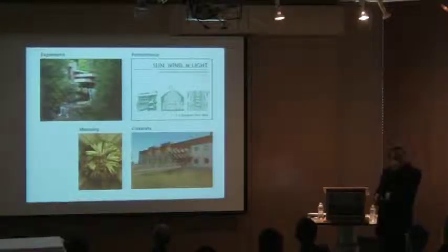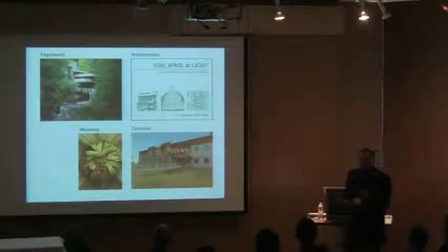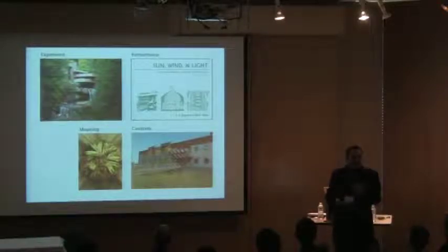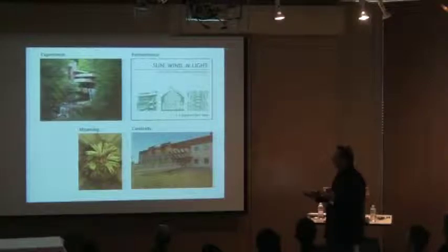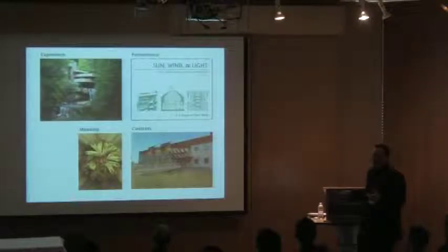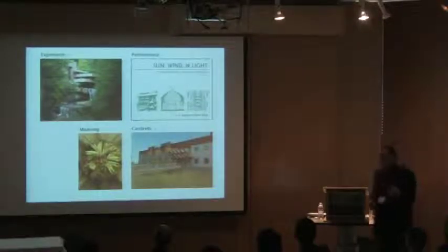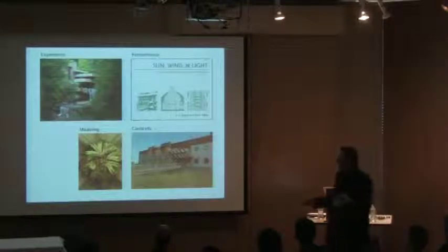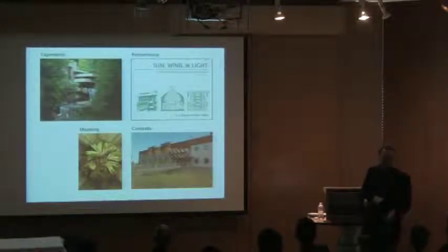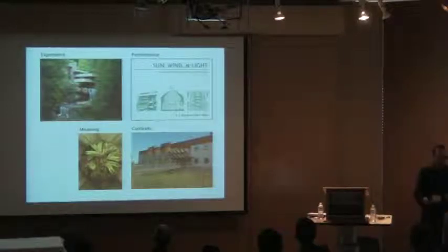You could take sustainable design and look at it from the standpoint of experience in a building like Fallingwater by Frank Lloyd Wright, which is really an icon of connecting people to the environment. And yet it's probably the most resource-consumptive house for two people before 1950 — it's 12,000 square feet and uses single-pane glass in a cold climate. So it does some things well — experience — but it doesn't do anything for performance.